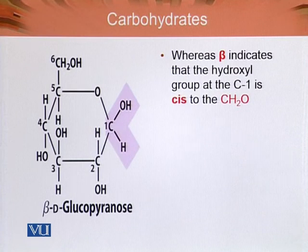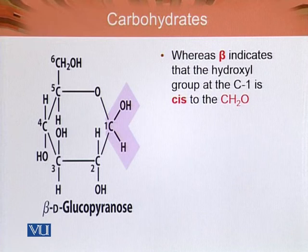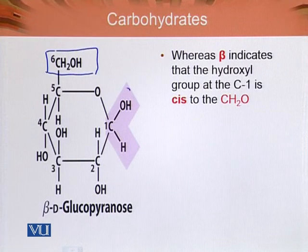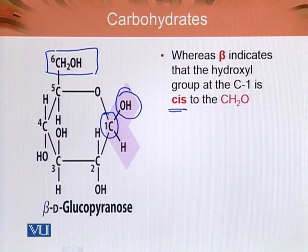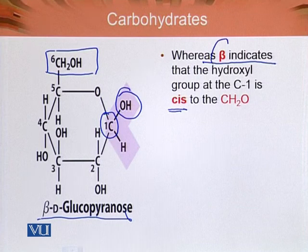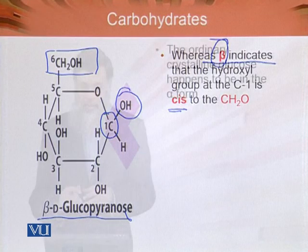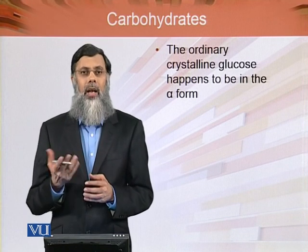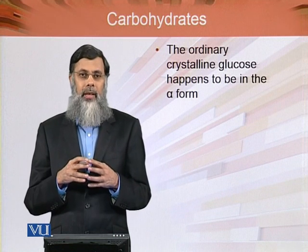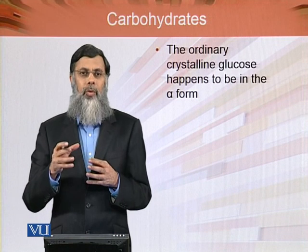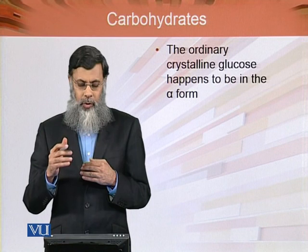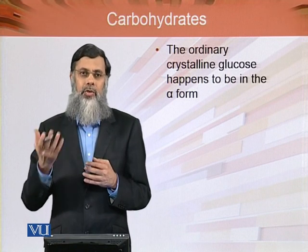Similarly, we said that two different forms are produced: alpha-D-glucose and beta-D-glucose. Alpha is defined as when C1-OH is trans to CH2OH. When the OH at C1 is cis — in the same plane as CH2OH — it is called beta, and the product is named beta-D-glucopyranose. The ordinary crystalline glucose happens to be in the alpha form, while in solution form it is convertible into both alpha and beta.